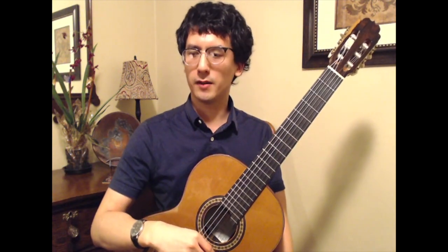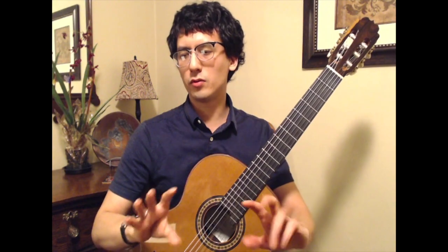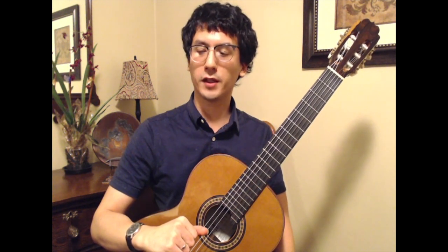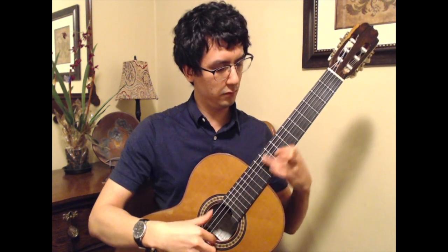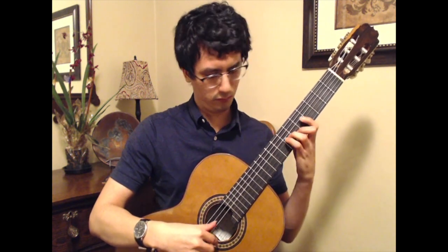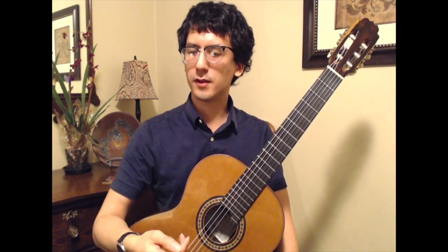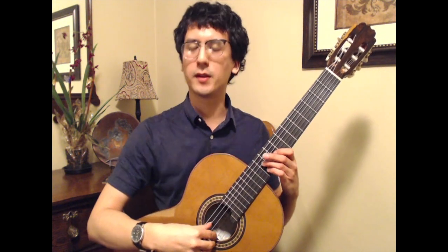The next four bars move to D minor. D minor expresses a subdued feeling of melancholy, grief, anxiety, and solemnity. Another quote says 'a pensive key, full of nobility and refined feeling.' I find the first one more appropriate for this example: subdued feeling of melancholy, grief, anxiety, and solemnity. To bring out this quote, this is a bit more straightforward — I'm just using a soft dynamic and a subtle decrescendo. I'll do that one more time and apply that information.